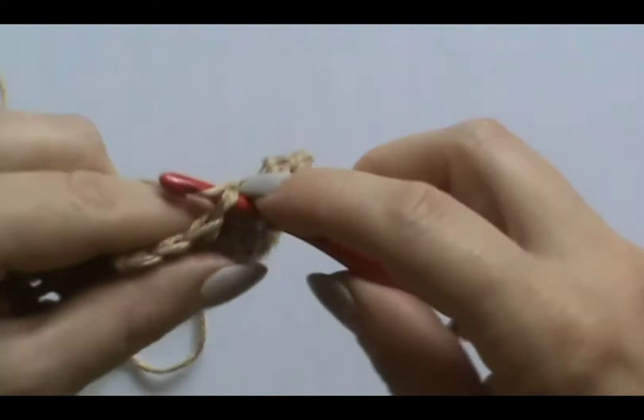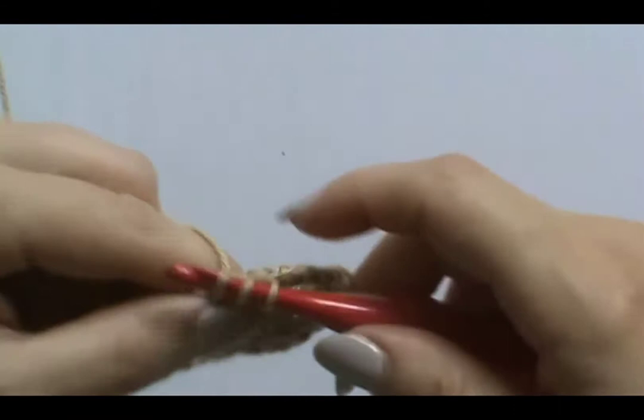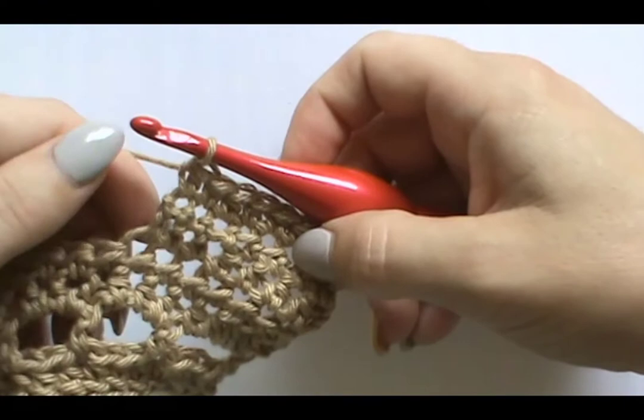I'm going to work half double crochets all the way to the end of the short row. In this case it's seven stitches. It was four half doubles and three singles, so four plus three equals seven. Now we are at the end of the short row.